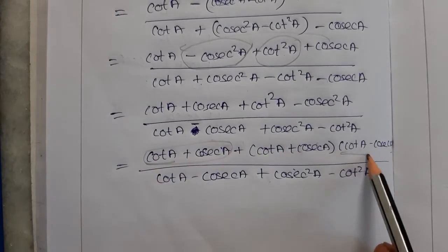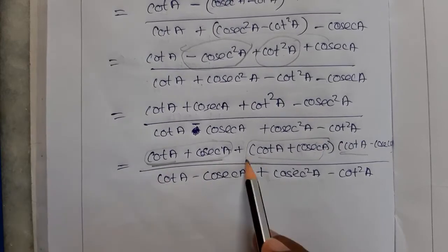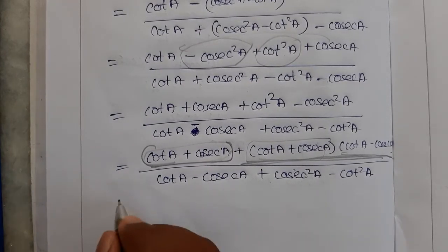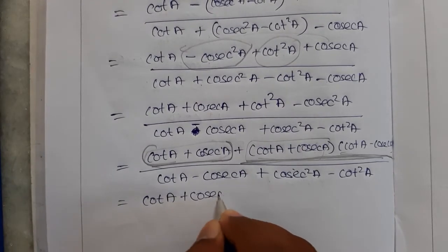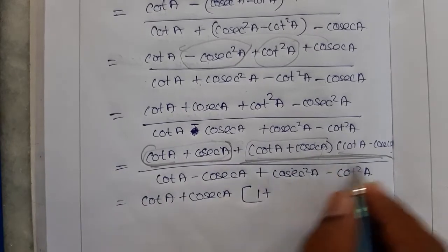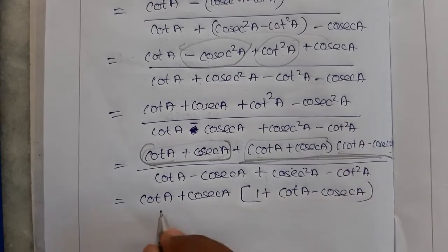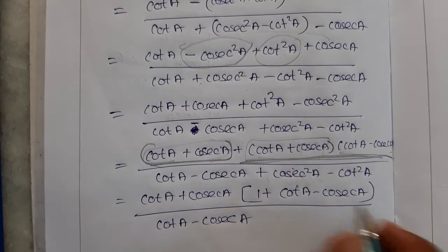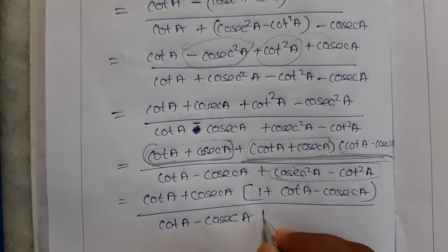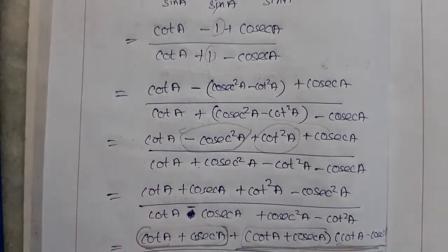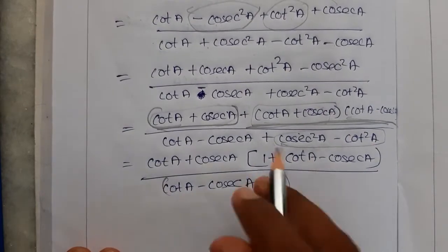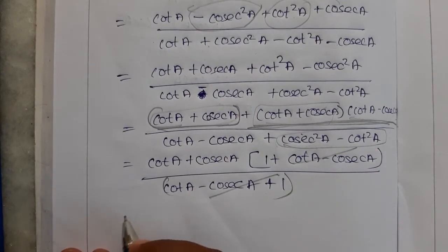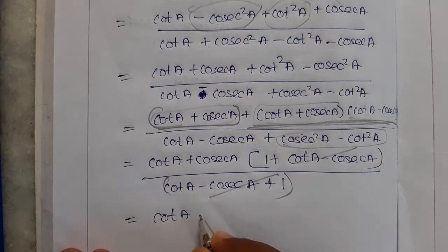We see that cot A plus cosec A appears in both numerator and denominator. Taking cot A plus cosec A as common outside, the remaining factor cot A minus cosec A in numerator and denominator gets cancelled. We are left with cot A plus cosec A, which is exactly the RHS required.